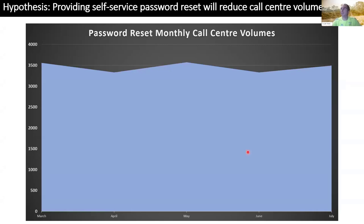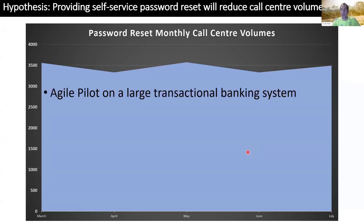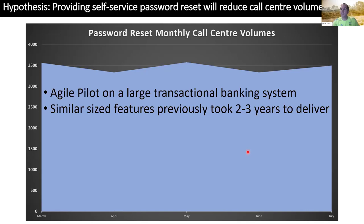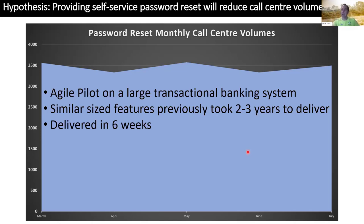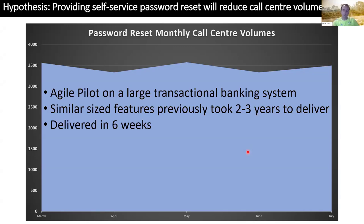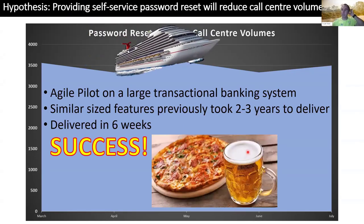For password reset, this was the agile pilot on the large transactional banking system — my first foray into the world of agile. In the past it had taken about two to three years to deliver something of equivalent size. We actually went back and checked: features similar to password reset were taking two to three years. We managed to deliver the whole thing in six weeks. Fantastic — we said this agile stuff works, had a pizza and beer party, and a couple of people even got a boat trip to Mauritius as part of an incentive programme.